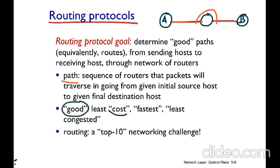Good could mean least cost, so the optimization goal is to use the least cost path. For example, if the link cost in both links is equal to 1, the cost from A to B is 2. We have to define the goodness of the path: the number of hops, the fastest path, the least congested path — we have to decide on these criteria.